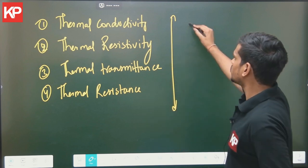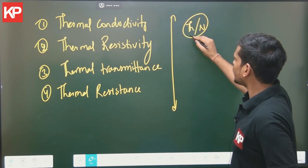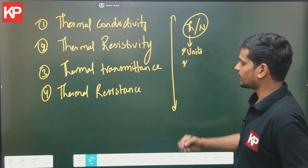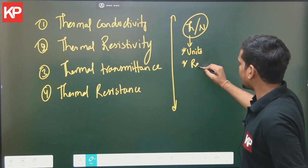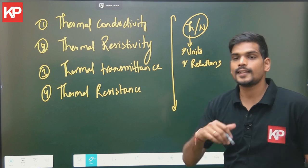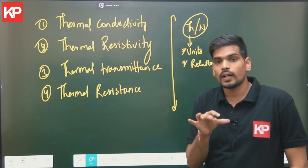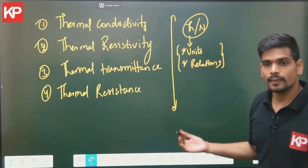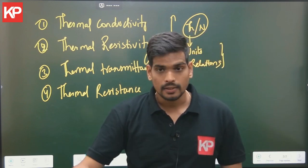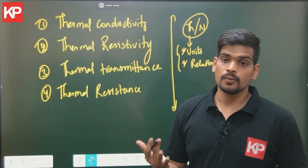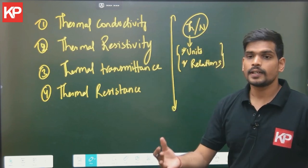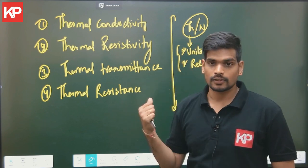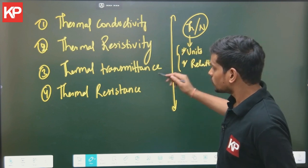From an exam perspective, theory questions are generally based on measurement units of various terms and relations between them — such as which quantity is directly or inversely proportional to another. Numericals include calculating the U-value or resistance of a wall or window. Numericals on thermal quantities were asked in both GATE 2022 and 2021, with two numericals asked in 2021 alone.